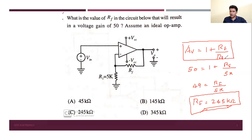Using the gain equation, Rf/R1 = 49, so Rf = 49 × 5 kilohm = 245 kilohm.